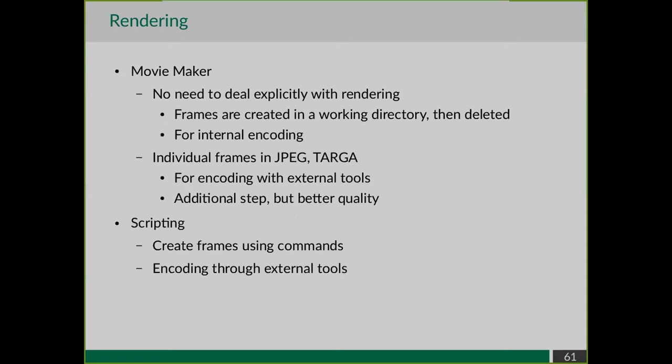For the rendering step, you typically do this via the movie maker. If you don't need separate frames but just want the final movie, you can tell movie maker to skip directly to encoding. Or you can generate individual frames in JPEG or Targa format for when you want to do the encoding yourself with an external tool - in my experience, this gives much better quality movies.